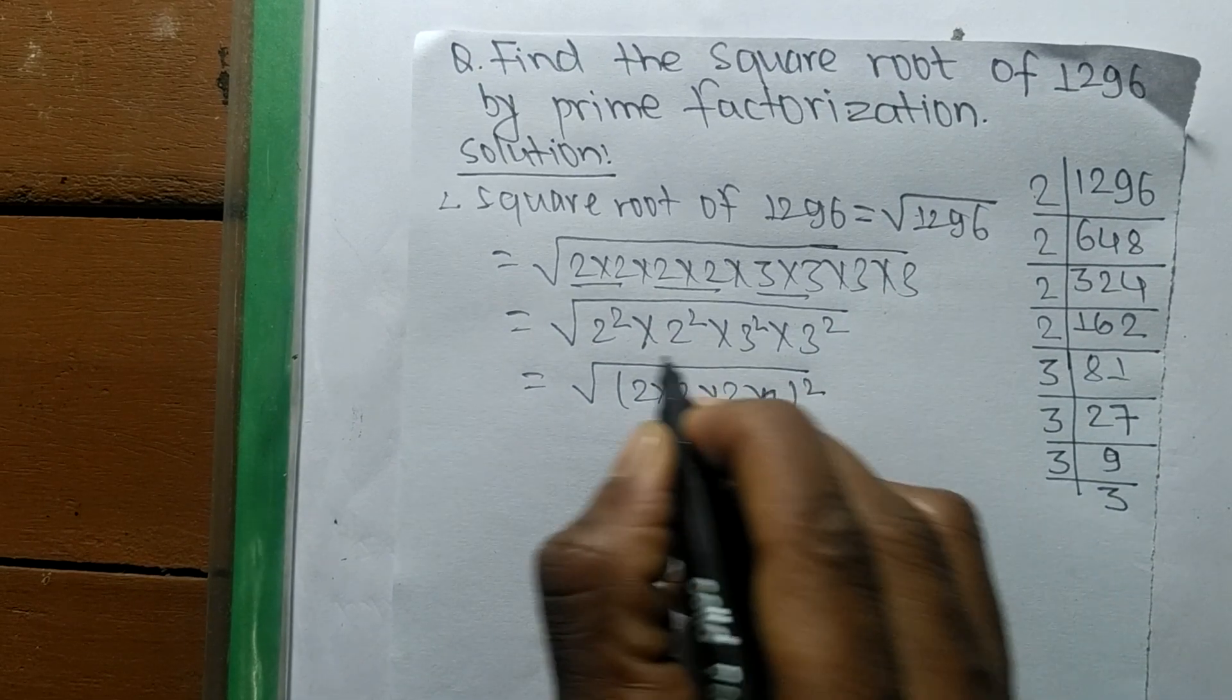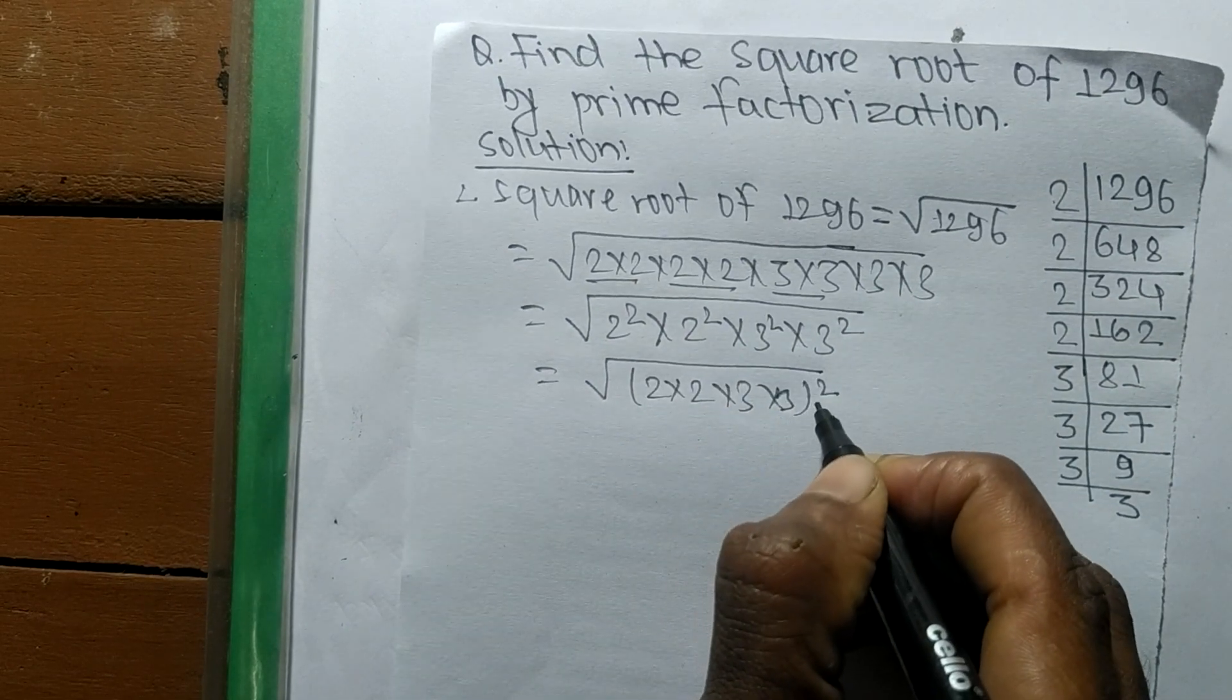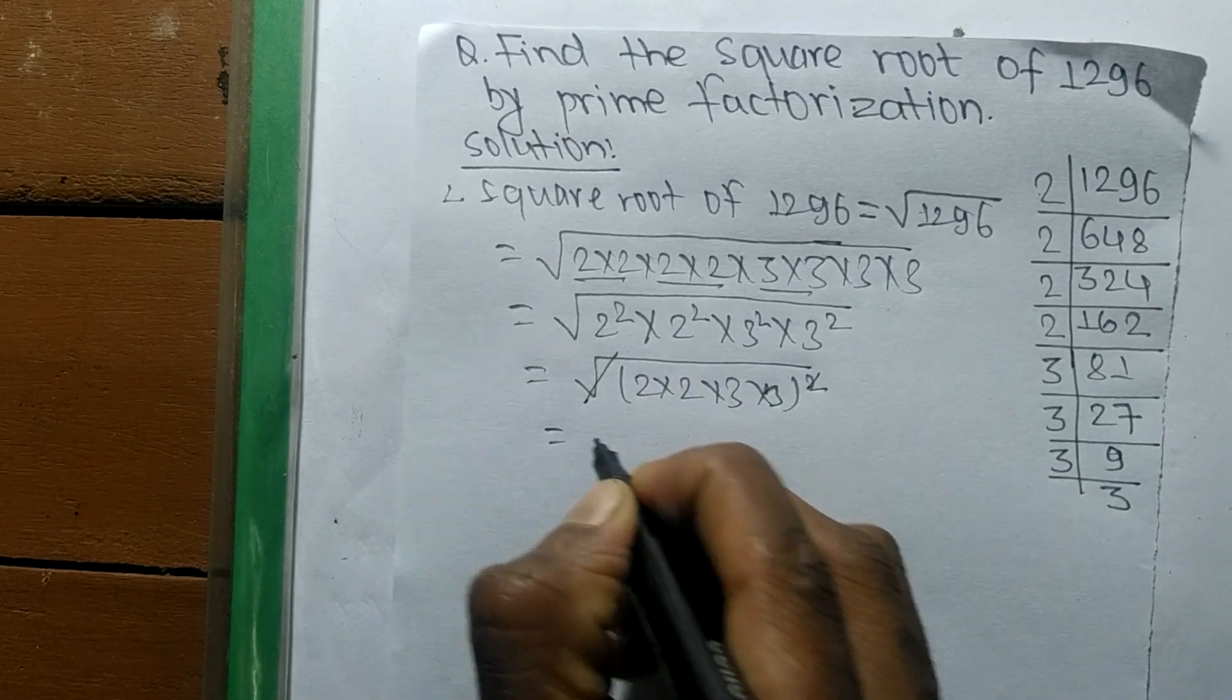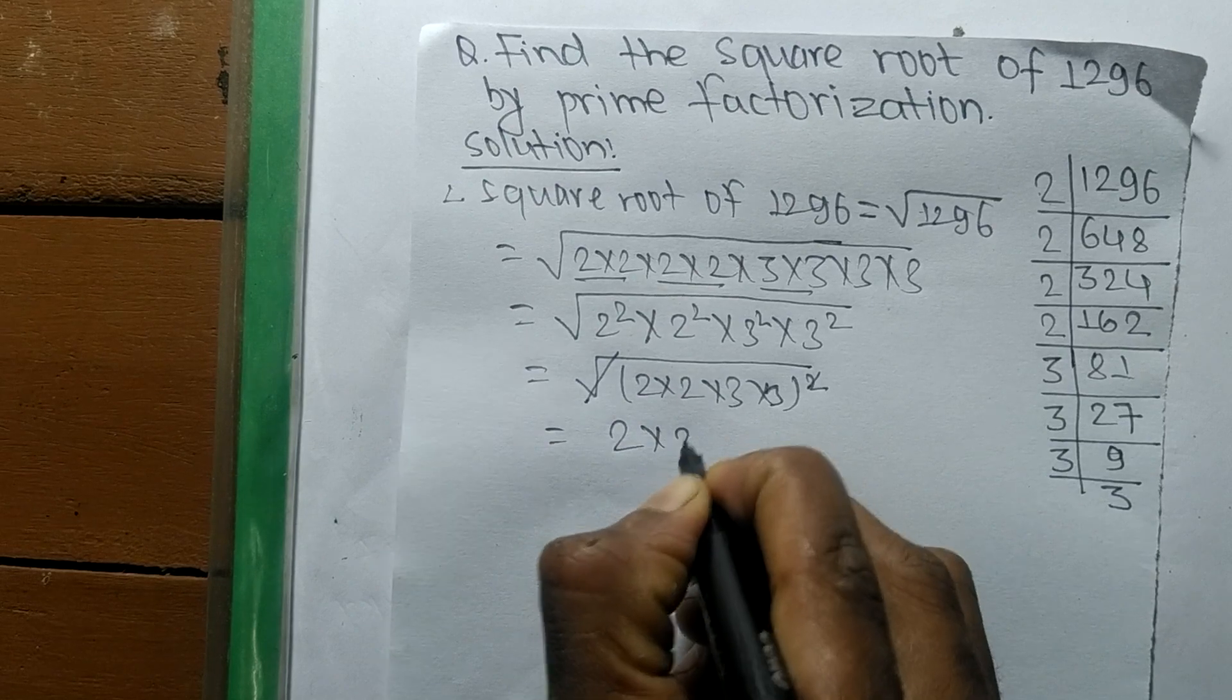Now square root and square cancel each other, so the remaining numbers become 2 into 2, 3 into 3.